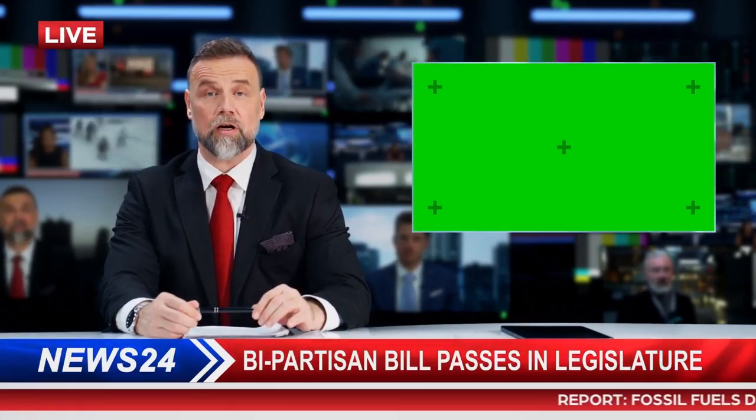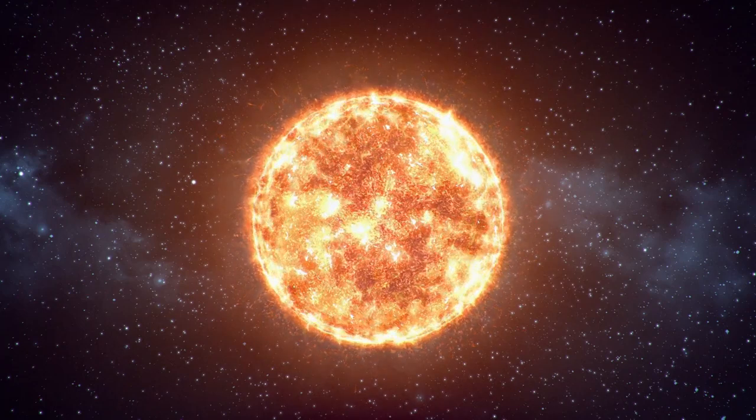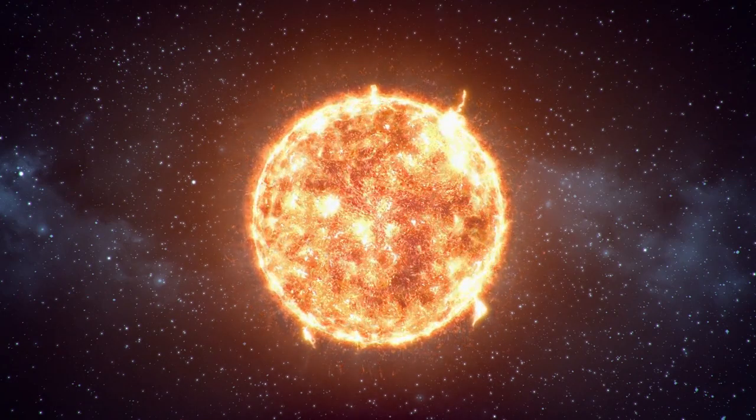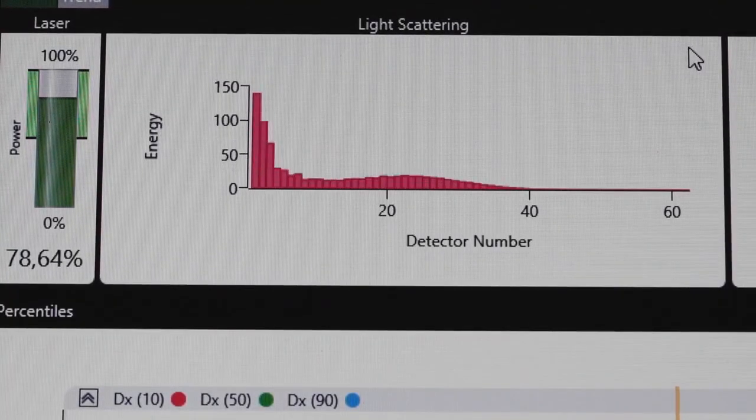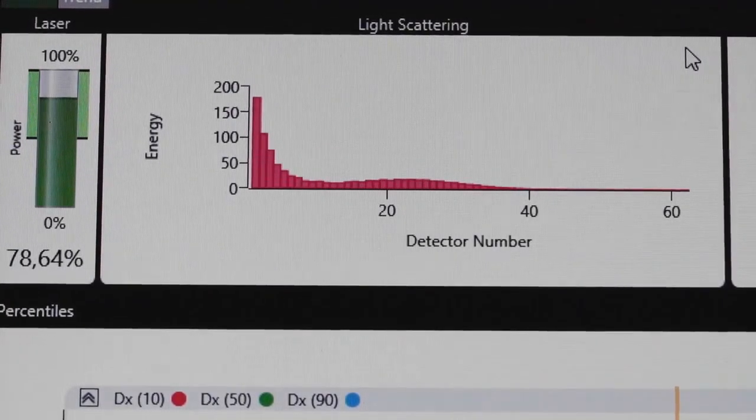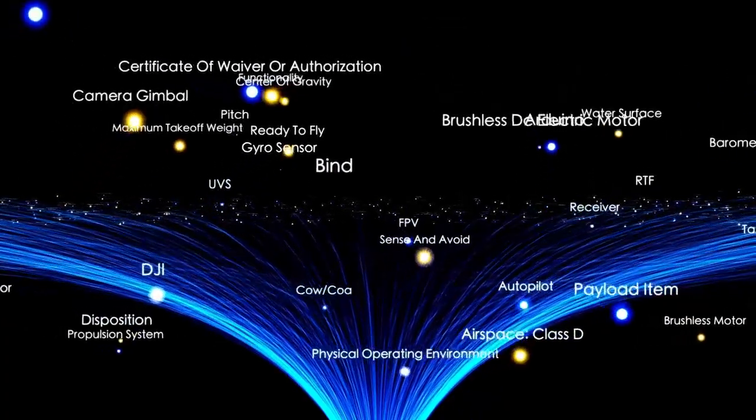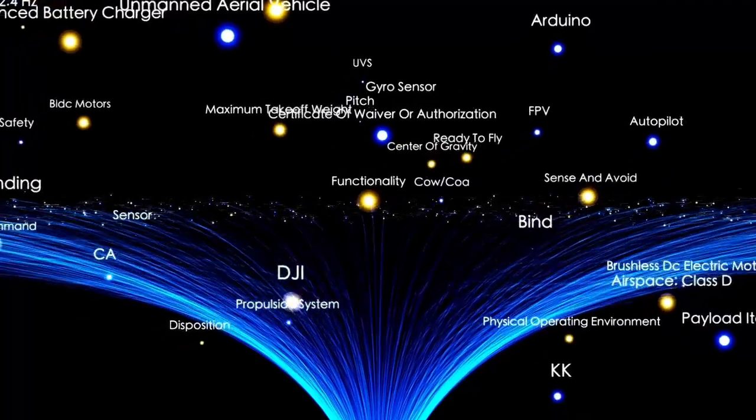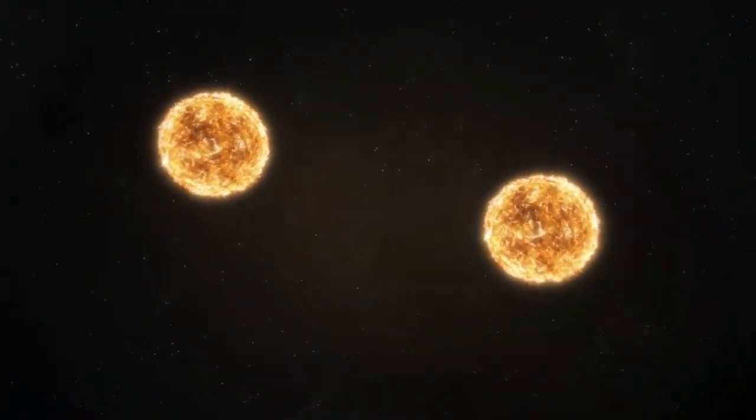Just when things couldn't get stranger, Webb found something even more outrageous. At the heart of one of these ancient galaxies sat a supermassive black hole, weighing more than a billion suns. In today's universe that would be astonishing, but in the early universe it was cosmologically absurd. Black holes are thought to grow slowly, over billions of years, by feeding on gas, dust, and stars. Even the most optimistic growth models can't explain how such a monster could exist within just 400 million years.